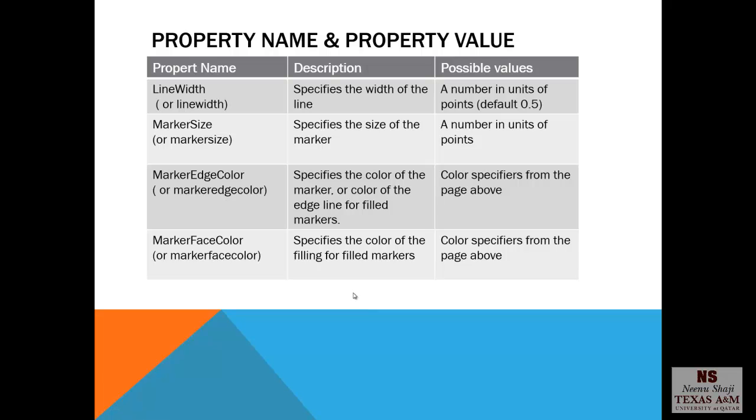The property name and property value. You can change the line width using the property name LineWidth. By default, it is having a thickness of 0.5, so you can specify the thickness of your line. MarkerSize specifies the size of the marker. MarkerEdgeColor specifies the color of the marker or the color of the edge line for filled markers. MarkerFaceColor specifies the color of the filling for filled markers.